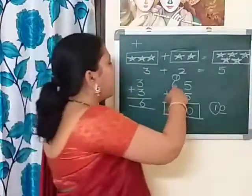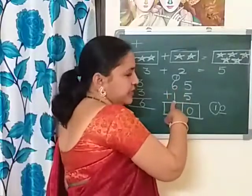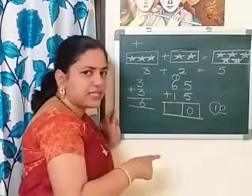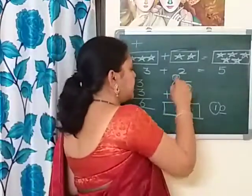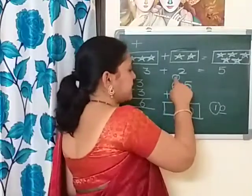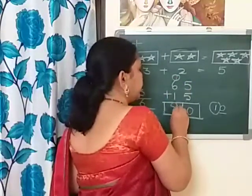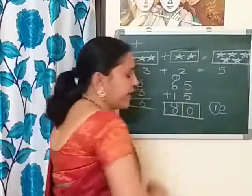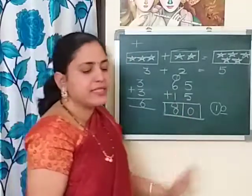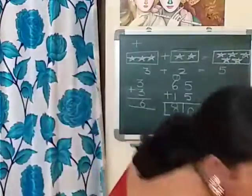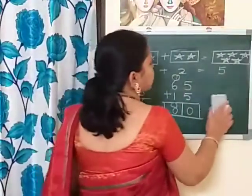Now we have six plus one, which is seven, plus the carry over of one — that makes eight. So our answer is eighty. Let's do one more example.